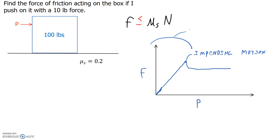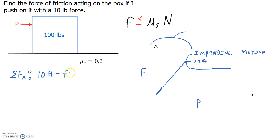So if I push on this box with a ten pound force, this is less than the maximum friction of twenty pounds. If I push any less than that, the friction force is just going to equal the pushing force. So if I write the sum of the forces in the x direction, I get ten pounds minus my friction force equals zero, or friction equals ten pounds. And that's my answer.